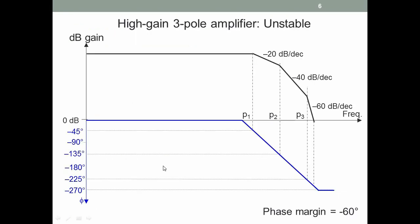Let us look at a Bode plot of a fictitious high gain amplifier that has three poles. The magnitude plot is flat for low frequencies, and then there are poles P1, P2, and P3, and the gain falls at minus 20, minus 40, and minus 60 dB per decade. All three poles are above the unity gain frequency. At P1 the phase is minus 45 degrees, at P2 minus 135, at P3 minus 225, and at the unity gain frequency the phase is somewhere between minus 225 and minus 270. So the phase margin is of the order of minus 60 degrees, but it must be at least plus 45 degrees.